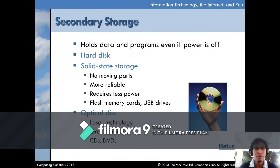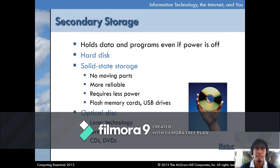Secondary storage holds data and programs even when the power is off — this is called permanent storage. Examples of secondary storage include hard disk, solid state storage, and optical disk. For hard disks, there are two types: external and internal. The external hard disk is connected via an enclosure, while the internal hard disk appears as local disk C or D. Even if you see two drive letters, there is only one physical hard disk inside that has been partitioned.